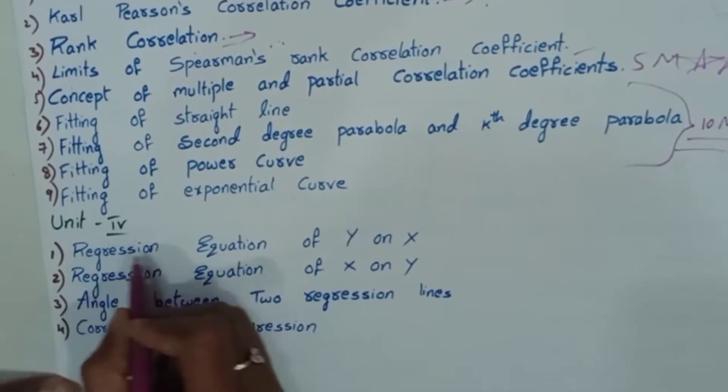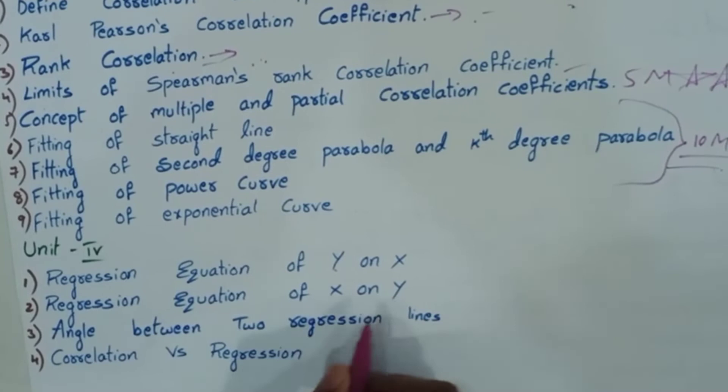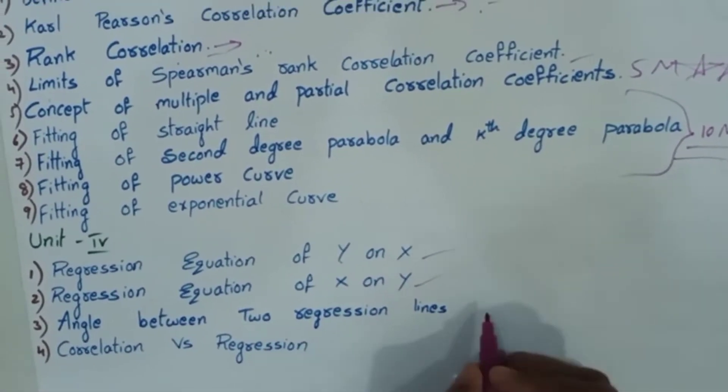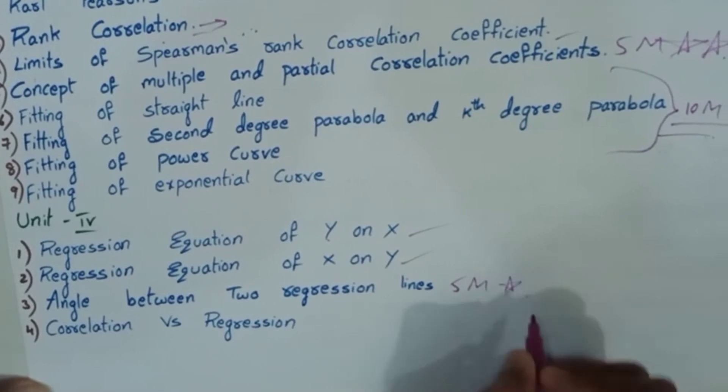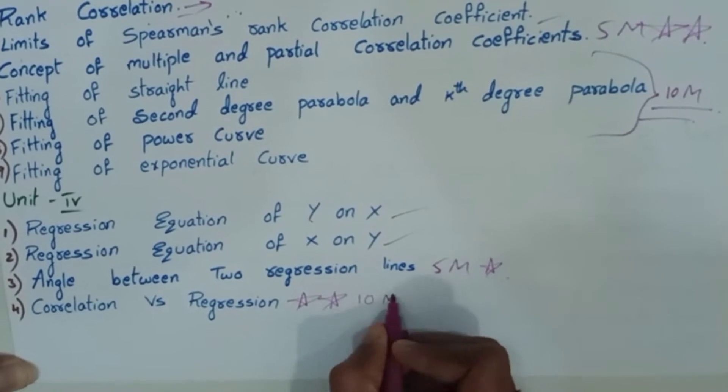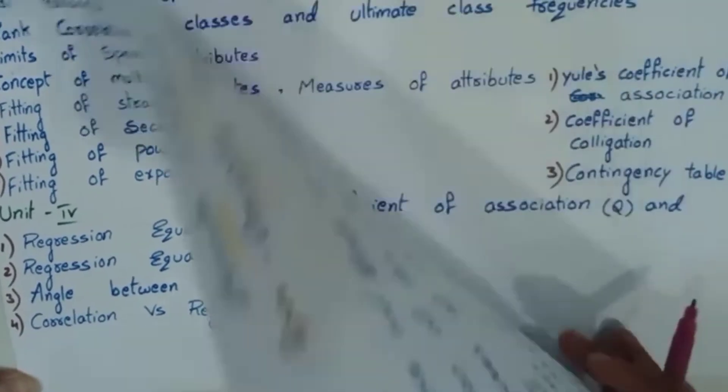Unit 4. Regression equation y on x and x on y. 2 questions, very important. And angle between 2 regression lines, 5 marks important. Correlation vs regression, very important question, 10 marks. So this 4 questions are compulsory. So prepare well.